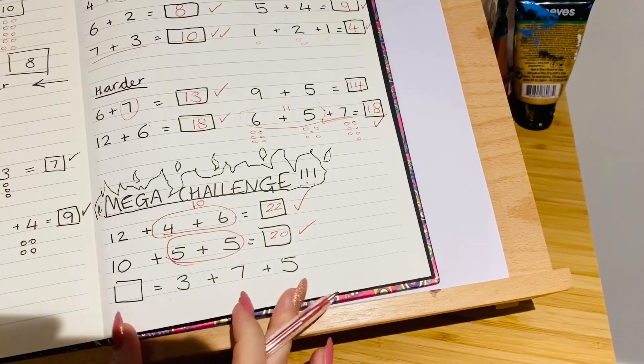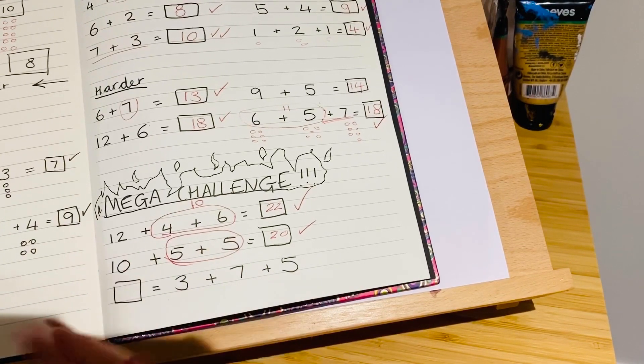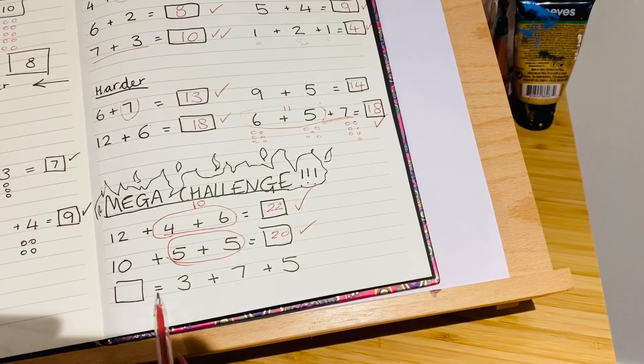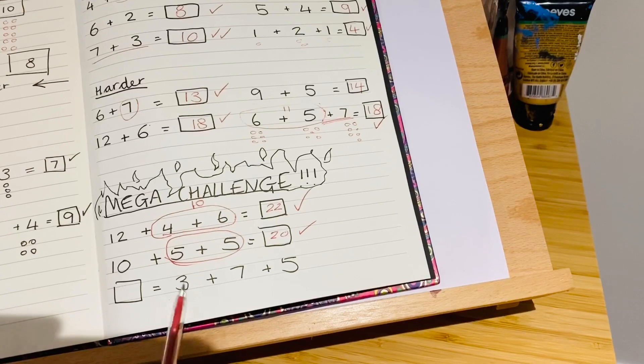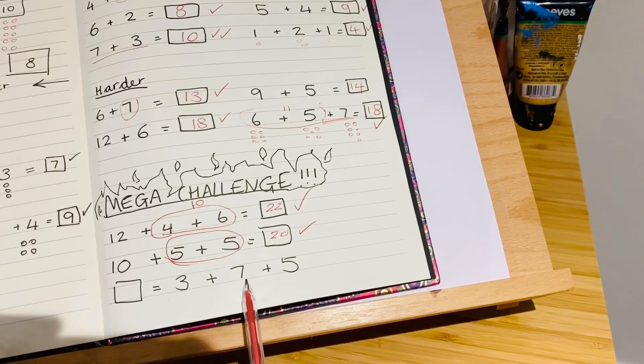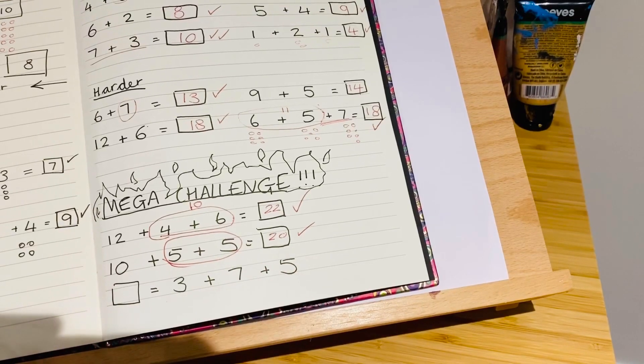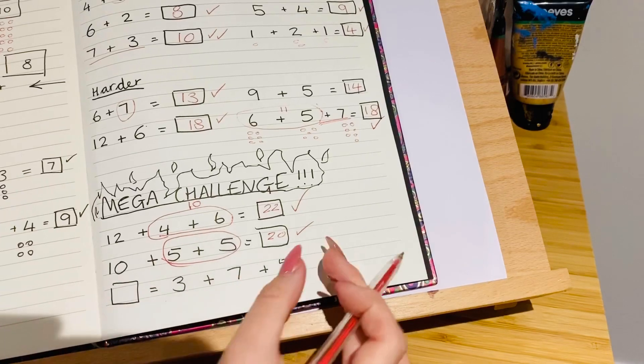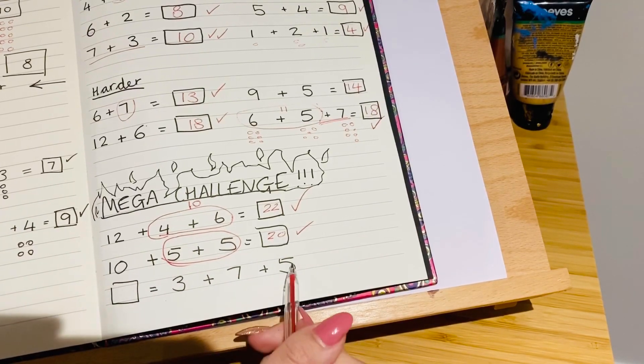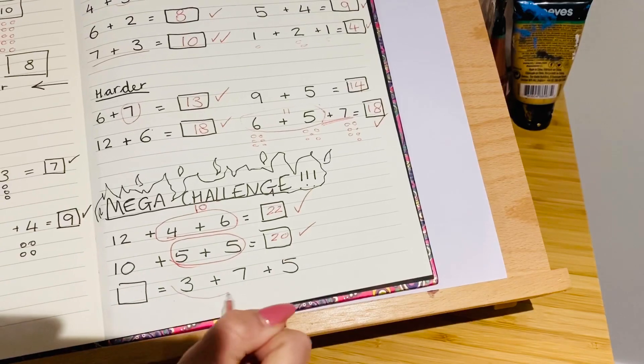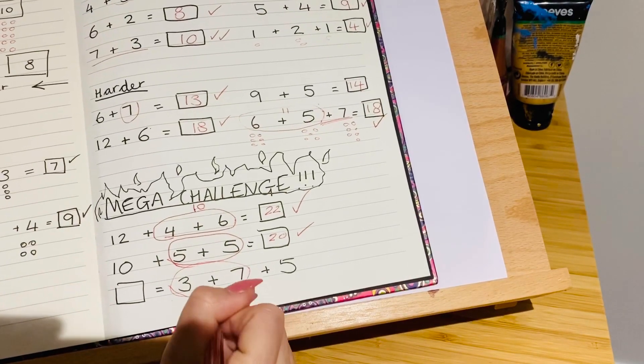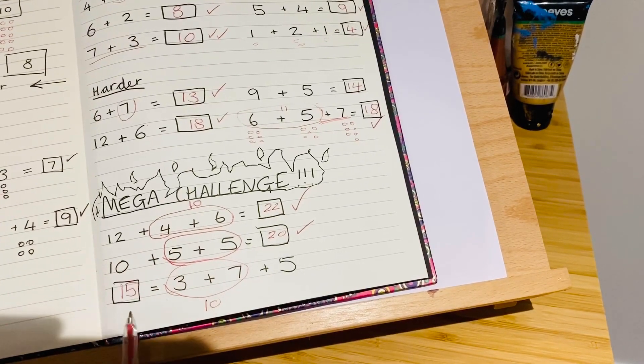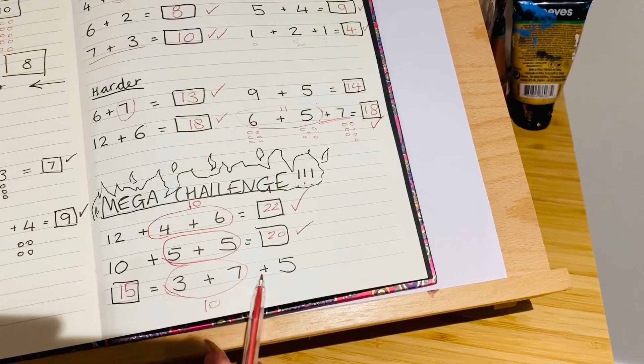The next one, I've thrown a bit of a curveball in here because I've swapped it around. So the equals comes first. Now with my class, we like to call, we like to say this is equals, but it also means is the same as. So something is the same as three plus seven plus five. So all we've done is swapped it around. It doesn't change the calculation. We've just moved this equals sign onto the other side instead of there. So I'm going to go for these two first of all, because I can spot a number bond to ten. So we've got three plus seven is ten. And then we've just got ten plus five. Ten plus five is fifteen. So if we read that back, fifteen is the same as three plus seven plus five. Give yourself a tick.